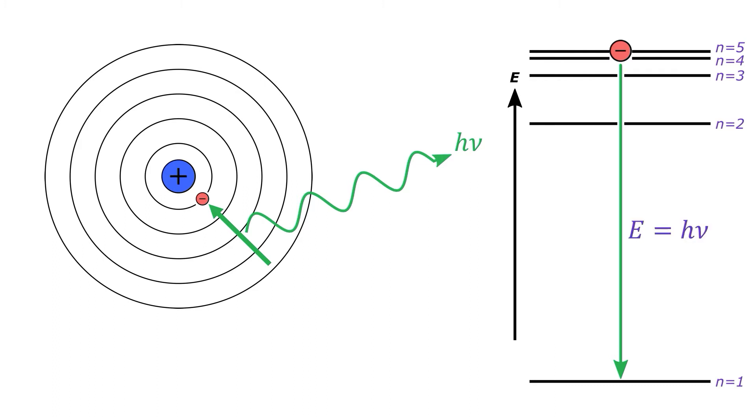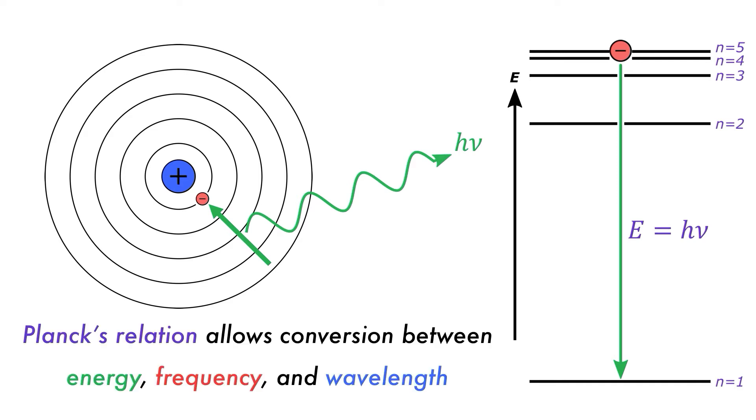This means that photons produced from this transition will always have the same energy, which can be related to the frequency via Planck's relation.